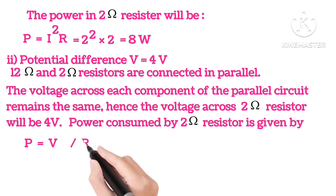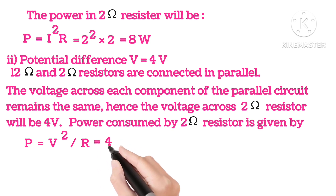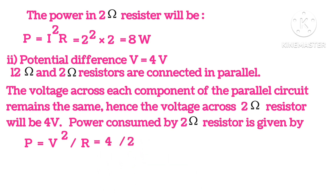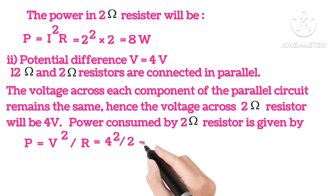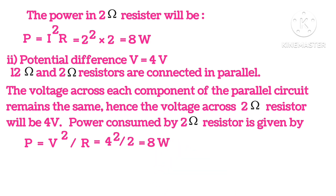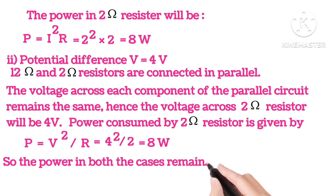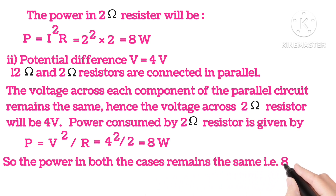Power consumed by 2 ohms resistors is given by P equals V squared upon R. Putting in the values, we get power equals 8 watts. So the power in both the cases remains the same, that is 8 watts.